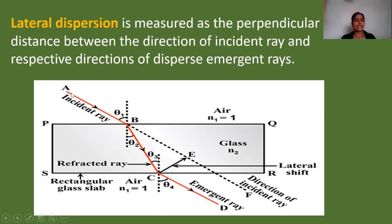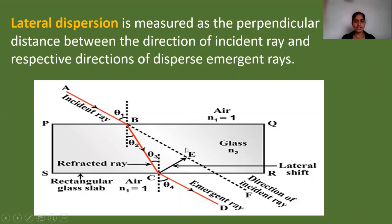Here is a glass slab. AB is the incident ray on the interface PQ. The first medium is air and the second is glass. The ray refracts, is incident at point C, and after refraction emerges out into air. The actual direction of the incident ray changes due to refraction. The original path would be B to F, but it bends B to C through the glass and emerges C to D. The perpendicular distance between the direction of the incident ray and the emergent ray is the lateral dispersion, also called lateral shift.